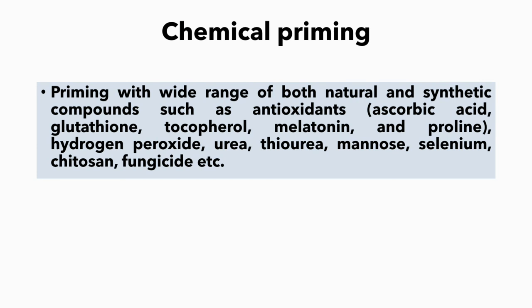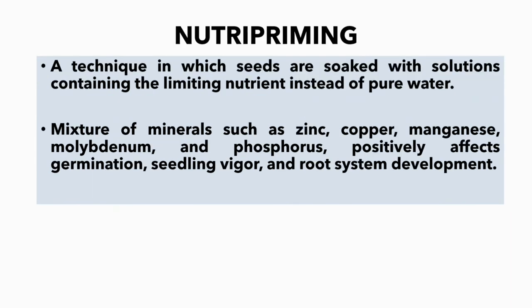Chemical priming involves priming with a wide range of both natural and synthetic compounds such as antioxidants, hydrogen peroxide, urea, thiourea, mannose, selenium, chitosan, and fungicides. For nutri priming, a technique in which seeds are soaked in solutions containing the limiting nutrient instead of pure water, a mixture of minerals such as zinc, copper, manganese, molybdenum, and phosphorus positively affects germination, seedling vigor, and root system development.